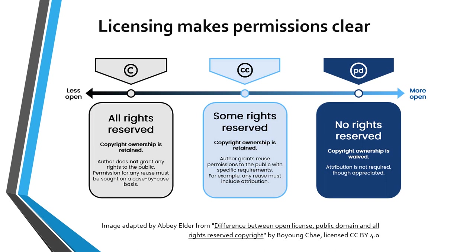Let's pull back for a minute to look at permissions. This is meant to be a brief overview. Be sure to check out the Copyright, Fair Use, and CCL presentation which goes into more depth. Copyright means all rights reserved — there are very specific ways these materials can be used. Fair use means that as educators and researchers we can use copyrighted material in certain ways without obtaining explicit permissions. Creative Commons licensing means that some rights are reserved — CCL unbundles those rights. Public domain means that no one owns the property and it can be used in just about any way.